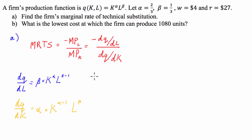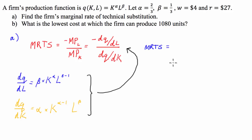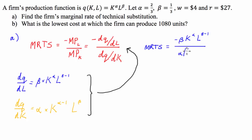From here we're going to substitute both of these derivatives back into the MRTS relationship. So the marginal rate of technical substitution is equal to the opposite of the marginal product of labour — which is negative beta times K to the alpha times L to the beta minus 1 — divided by the marginal product of capital, which is alpha times K to the alpha minus 1 times L to the beta.